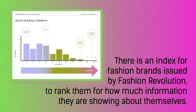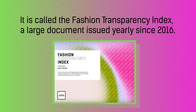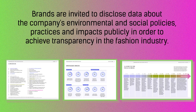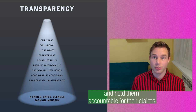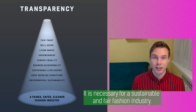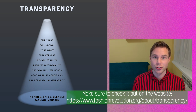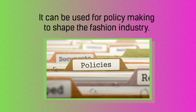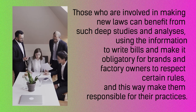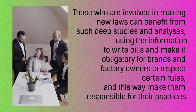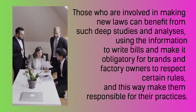There is an index for fashion brands issued by Fashion Revolution to rank them for how much information they are showing about themselves. It is called the Fashion Transparency Index, a large document issued yearly since 2016. Brands are invited to disclose data about the company's environmental and social policies, practices, and impacts publicly in order to achieve transparency in the fashion industry. Going transparent means they let others look into them and hold them accountable for their claims. It is necessary for a sustainable and fair fashion industry. Make sure to check it out on the website. It can be used for policymaking to shape the fashion industry, as those involved in making new laws can benefit from such deep studies and analysis to write bills and make it obligatory for brands and factory owners to respect certain rules.